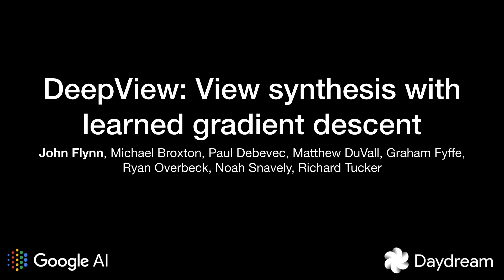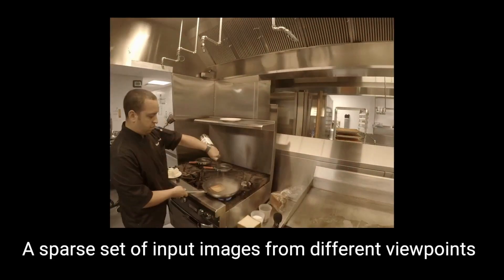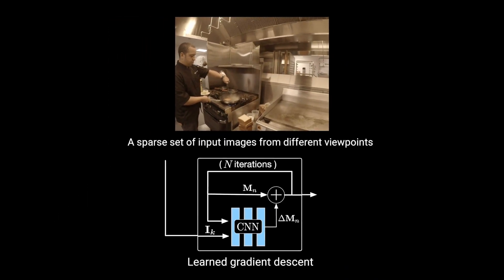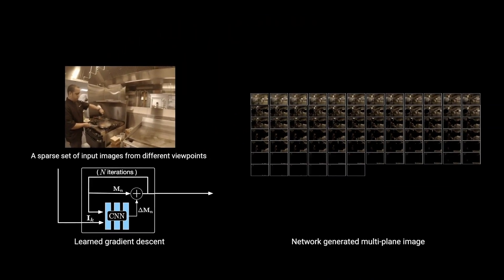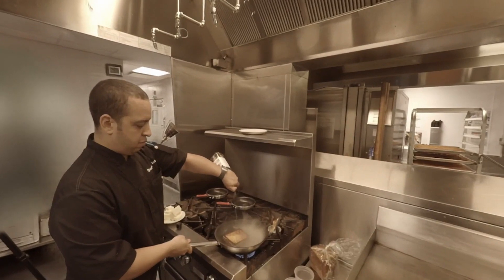In this work, we present a new technique for photorealistic view synthesis. Given a sparse set of input views, our method uses the recently introduced learned gradient descent to generate a multi-plane image. A multi-plane image, or MPI, is a representation of a scene that allows real-time rendering to new viewpoints with standard graphics hardware.